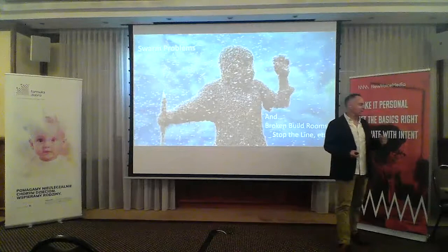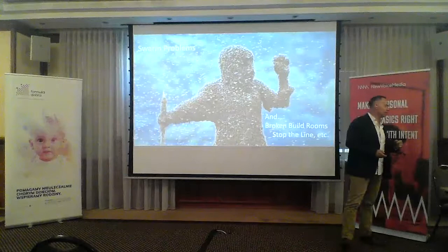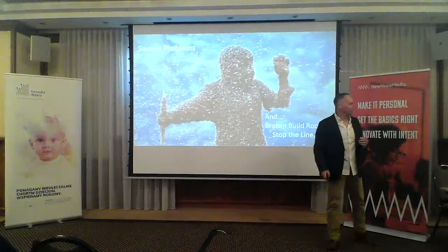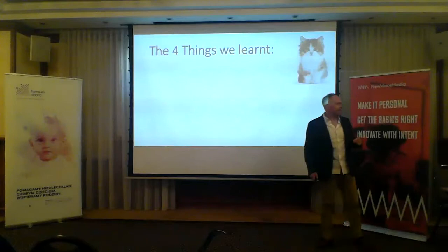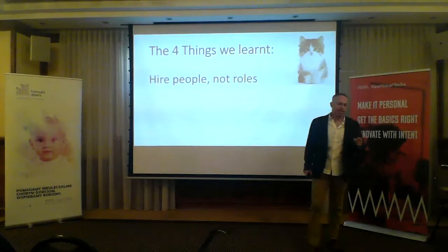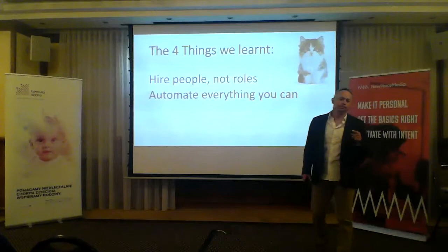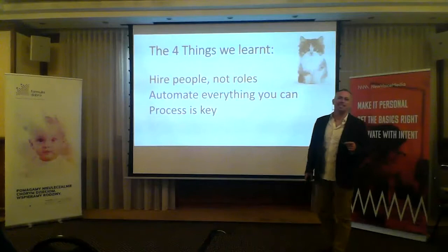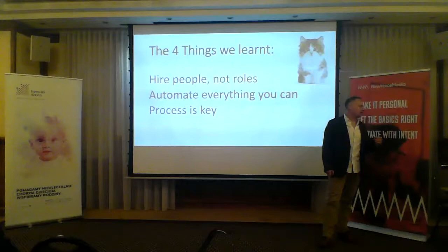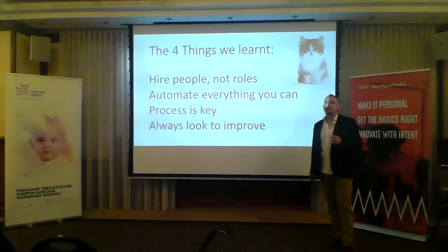I've got a few things to sum up — that's the end of phase four, and we've just been acquired with a whole new set of problems. Four things — actually five — we've learned: number one, we hire people, not roles. It's the people who are important, not the role they are filling. Automate everything you can. Process is key — we know the process behind the product is integral to getting the good product out. And lastly, always look to improve. At no point have we said we've got this nailed — it's always, what can we do to get it better?